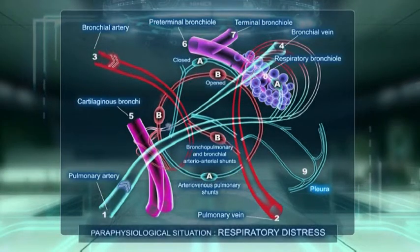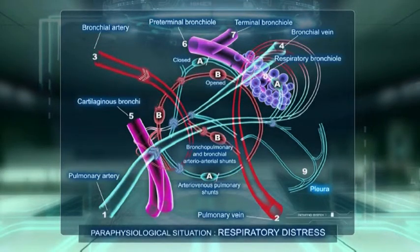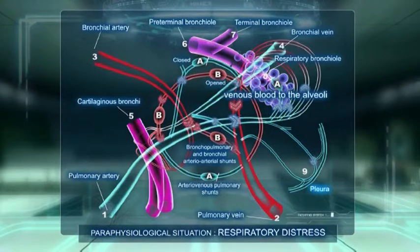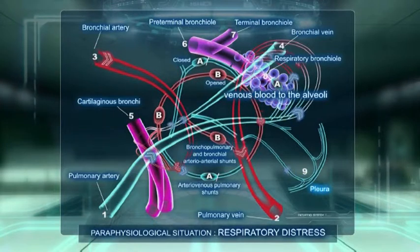During hyperventilation, these pulmonary shunts close and the AV bypass stops, so the whole volume of the lung is perfused and ventilated.